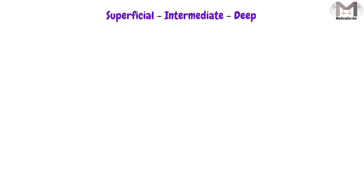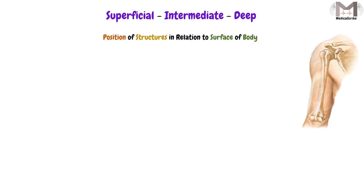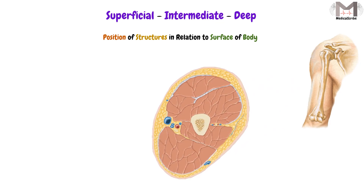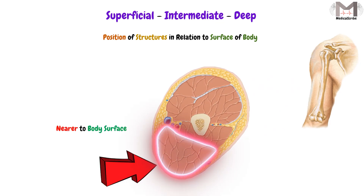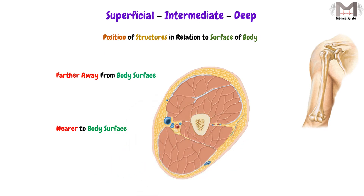These three terms in the first subgroup — superficial, intermediate, and deep — describe the position of structures in relation to the surface of the body. That means which structure is near to the body surface and which one is farther away from it. We should note that these descriptions are always made in comparison with another structure, as we will see in the upcoming examples. The first term is superficial.